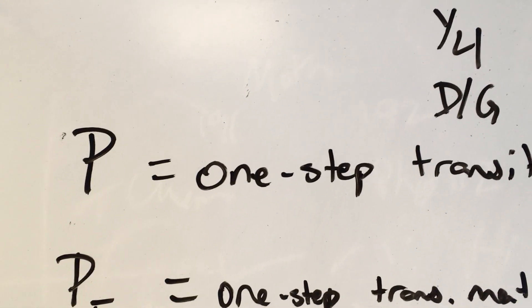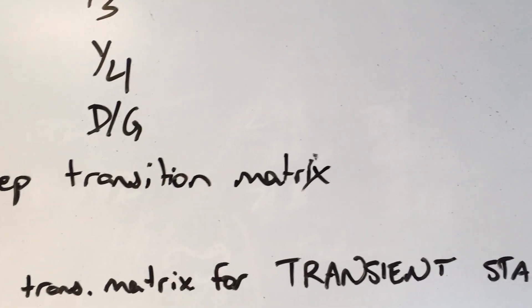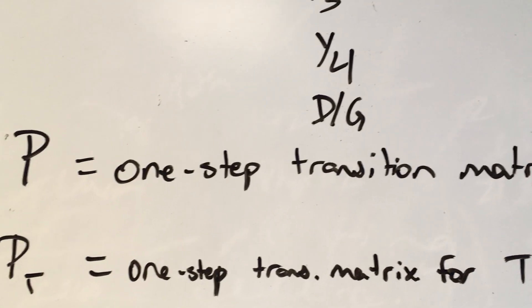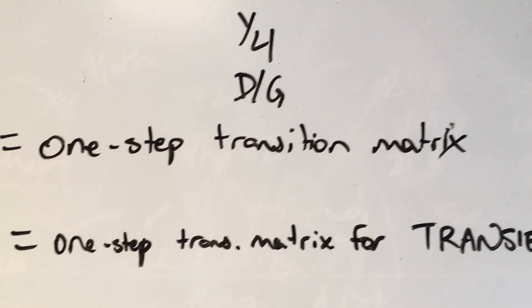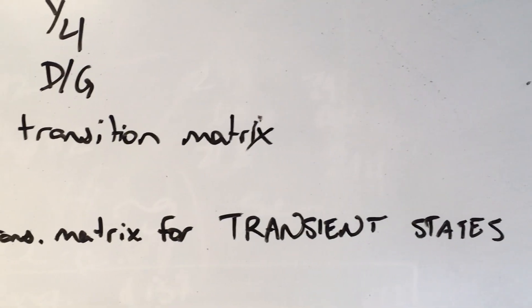So let's talk about P being our one-step transition matrix. So that's what we've been doing so far. And now we're going to define PT. And PT is going to be our one-step transition matrix, but only for the transient states.